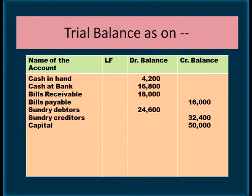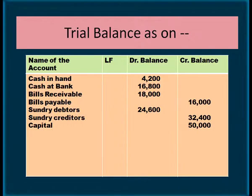Write the heading: 'Trial Balance as on [date]', then columns: name of account, ledger folio, debit balance, and credit balance. Cash in hand — asset, debit column. Cash at bank — asset, debit column. Bills receivable — asset, debit column. Bills payable — liability, credit column. Debtors — asset, debit column. Creditors — liability, credit column. Capital — liability, credit column.